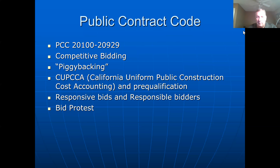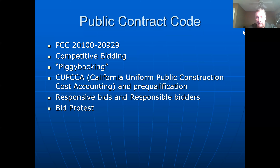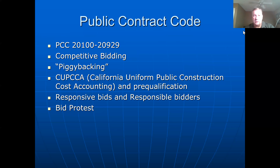If you have a responsive bid from a responsible bidder and it's the lowest bid, you as the government are legally obligated to accept it. Other bidders can launch a bid protest, claiming the accepted bid was non-responsive or the winning bidder was not fiscally responsible. There is a whole process to appeal to the city council or school board to try and get the bid overturned. It's a very long, protracted process of contracting out to private sector corporations to construct these capital projects.